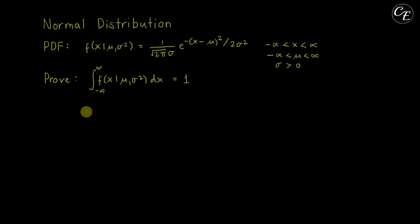Hello everyone. In this video I'm going to show you how to prove that the integral of the probability density function of the normal distribution is equal to 1. This is one of the properties of a continuous probability distribution, aside from the fact that their probability density function should always be greater than 0. Now let us start with our derivation.